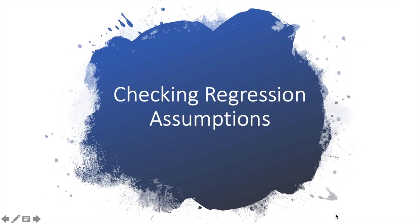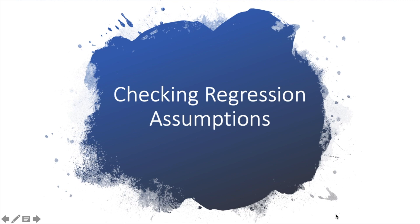Next, we'll be looking into some regression assumptions that you can check using Microsoft Excel. The first one is linearity — we're going to see whether there's a linear relationship. Linearity can usually be checked using the scatter plot. If you have the scatter plot for sales and income, you can see that it's showing a linear relationship.